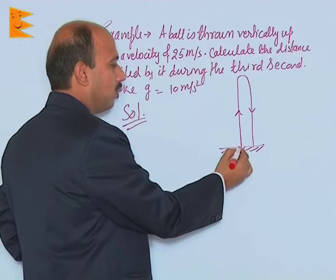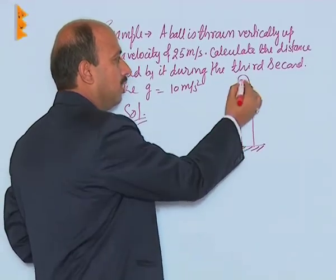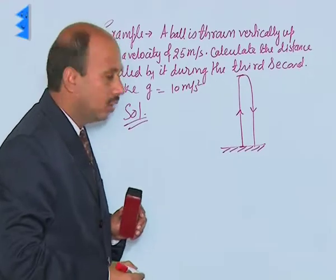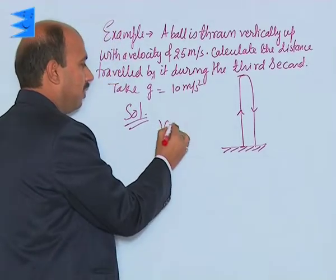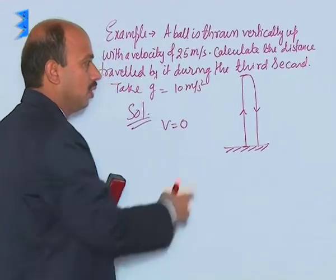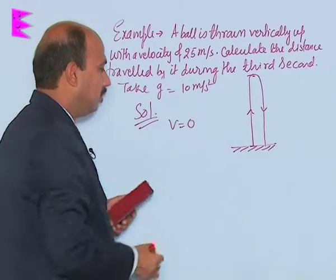First, find out how much time the body takes to reach maximum height. We can write V equals 0, at maximum height the final velocity will be 0.